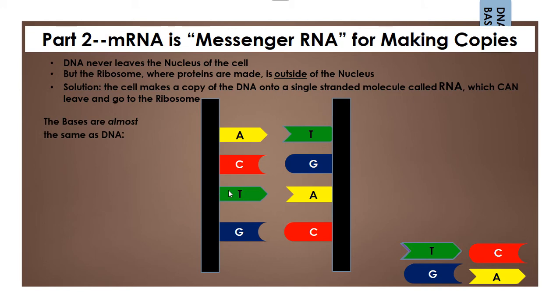The bases of RNA are almost the same as DNA. The three of them are exactly the same. A, C, T, and G are still A, C, T, and G. And they still match with the same complementary bases. But one is different.